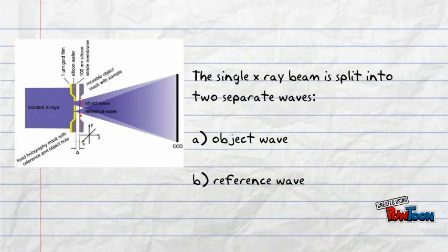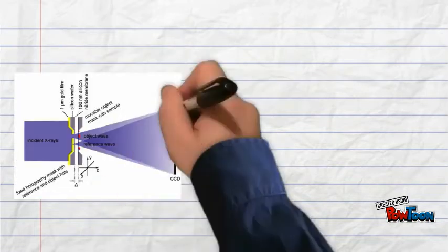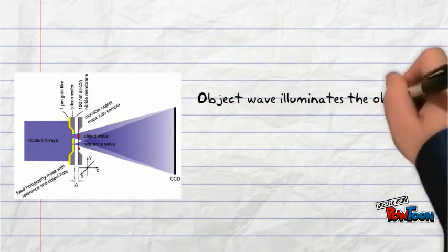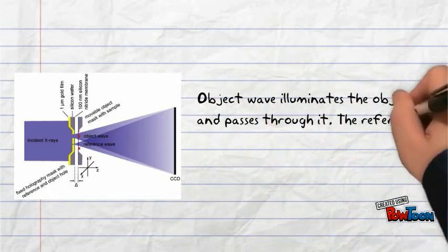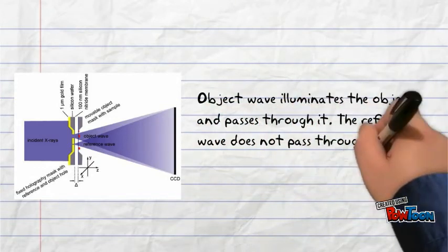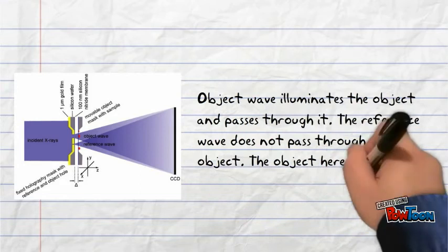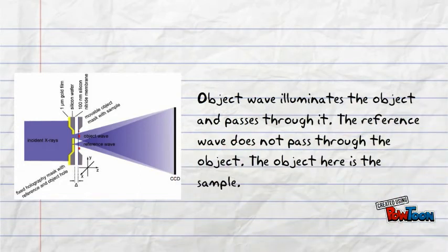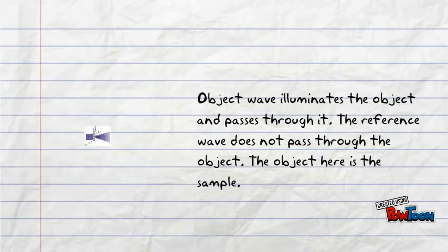The object wave will then illuminate the object. The wave that passes through the object will then interfere with the reference wave on the CCD camera. The reference wave is not to be confused by the wave that passes through the object. The reference wave is the wave that does not pass through the object.